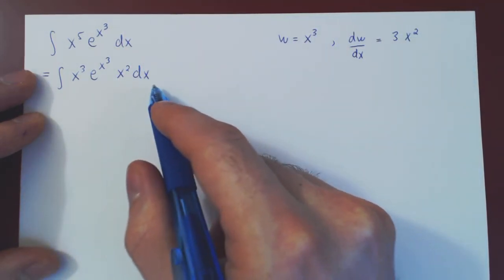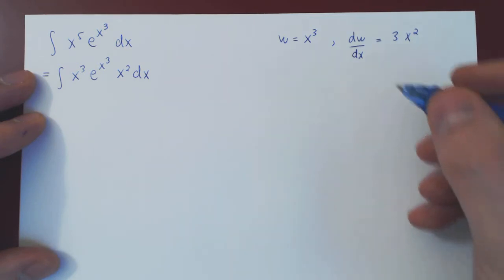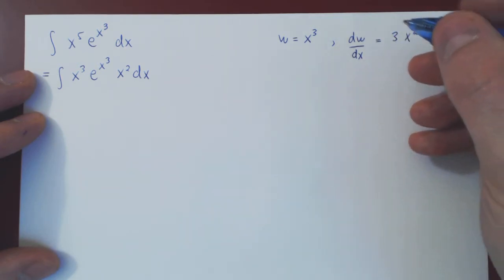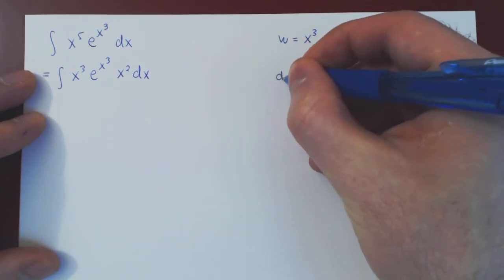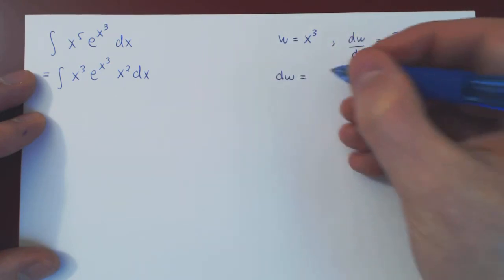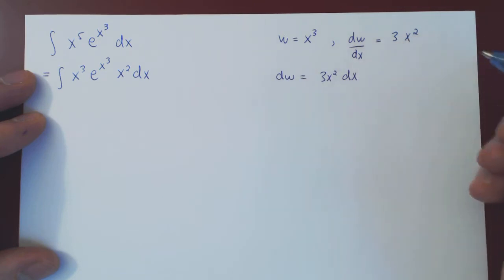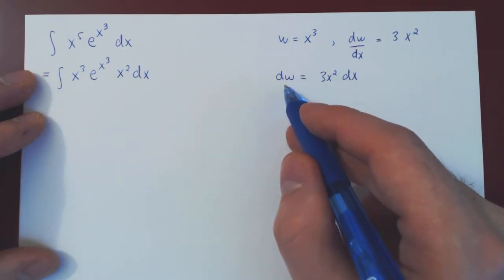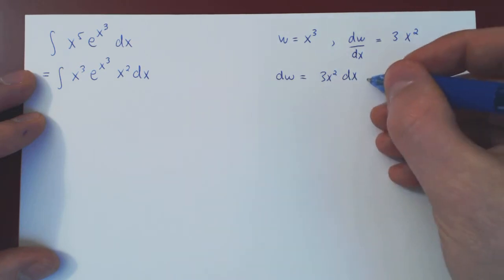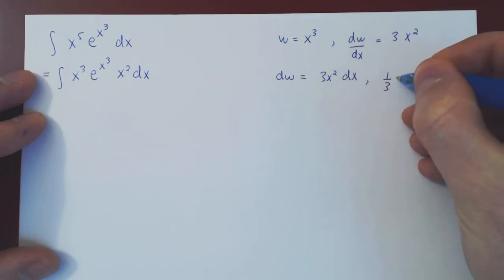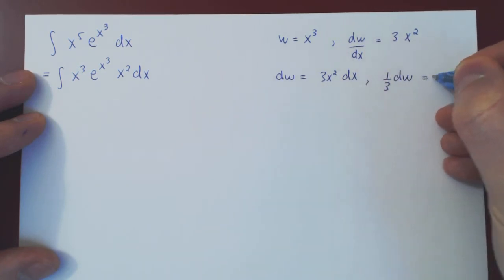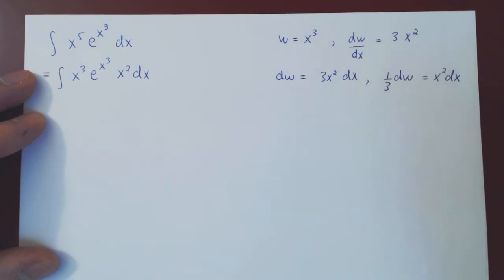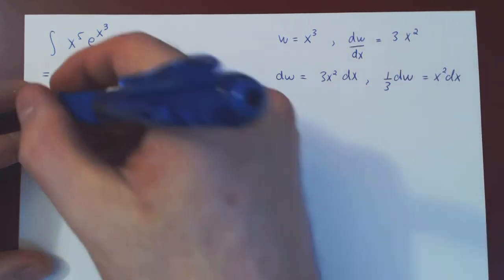And you see, I'd like to get an x squared dx, which I can have here. Multiply across by dx, you get dw is equal to 3x squared dx. As I only have an x squared dx, I will divide by 3 both sides to get my x squared dx. And so, you see that 1 third dw is x squared dx. And now, we can pull off our substitution.